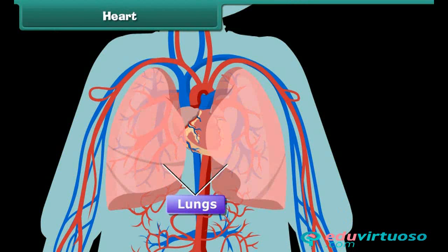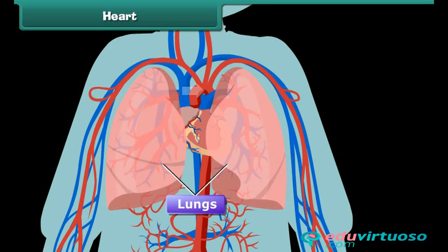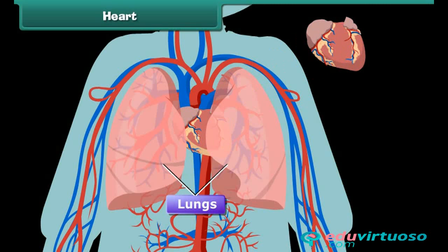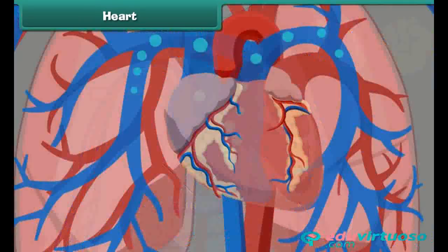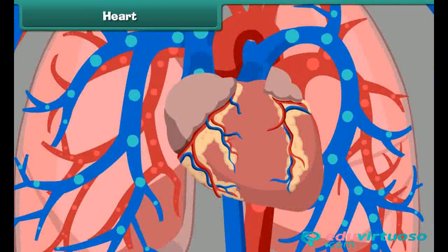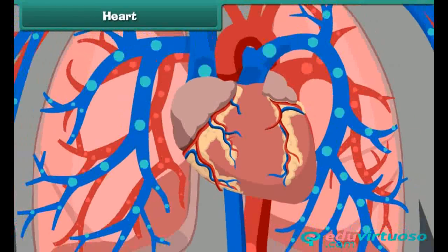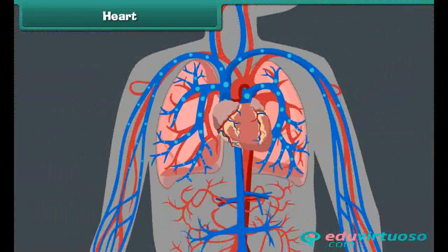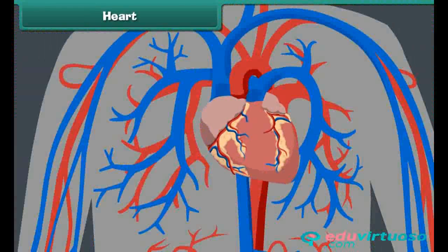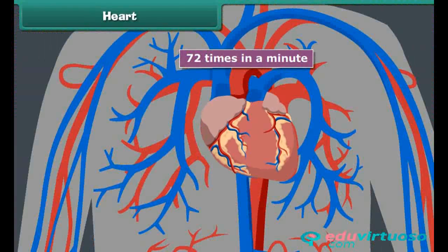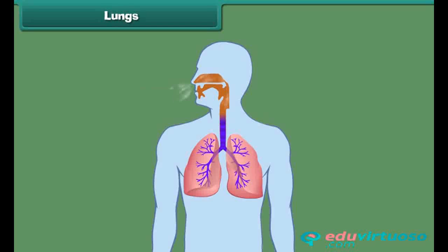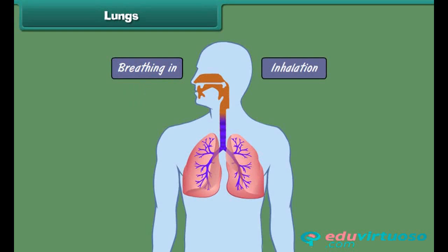The human heart is located in the chest cavity, between the two lungs, a little to the left of the center of the human body. It is conical in shape, about the size of a clenched fist. The heart is a bag of muscles responsible for pumping blood filled with oxygen and other nutrients throughout the body. The human heart beats 72 times per minute and works continuously without getting tired.